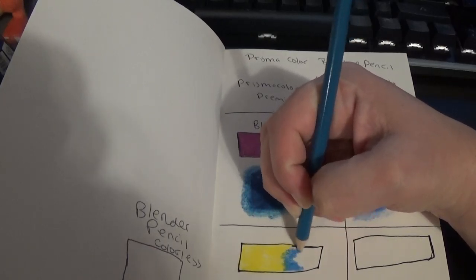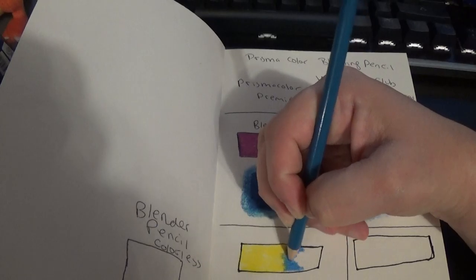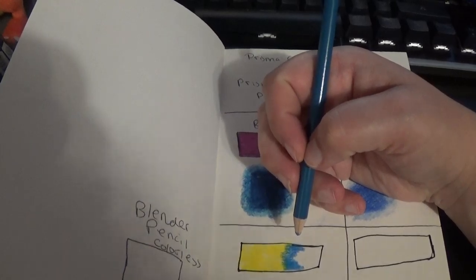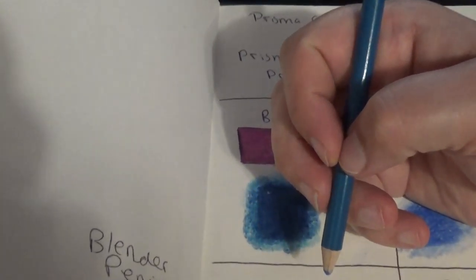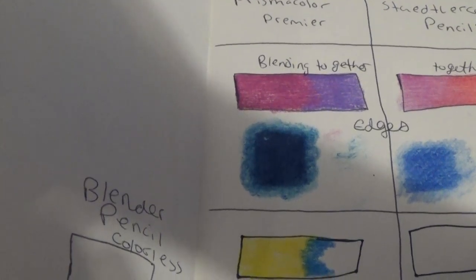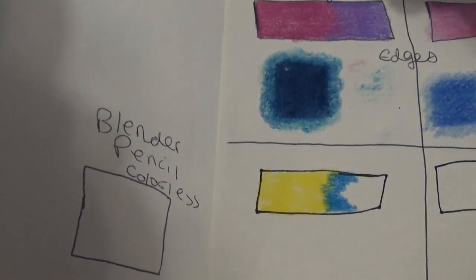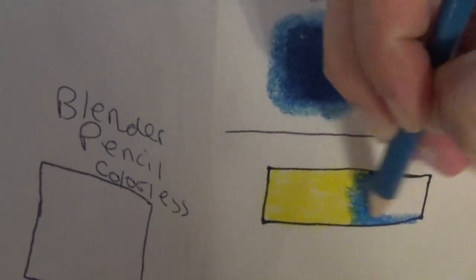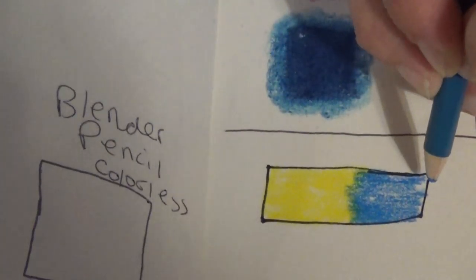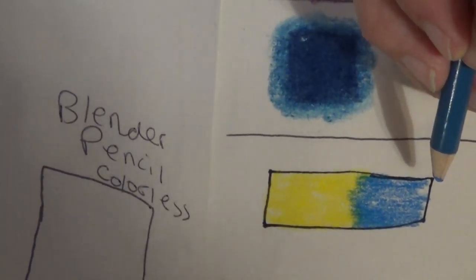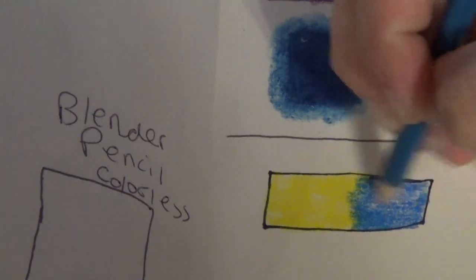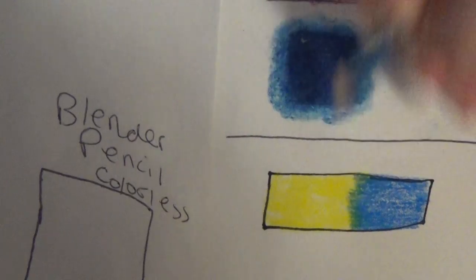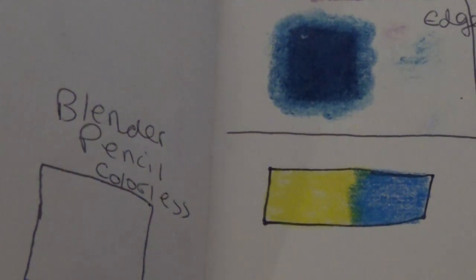The Prismacolors tend to blend together really good. As you can see at the edge, it's turning a little green. Oops. Don't know how well I can see that. A little green from here. That's kind of what I wanted to see.